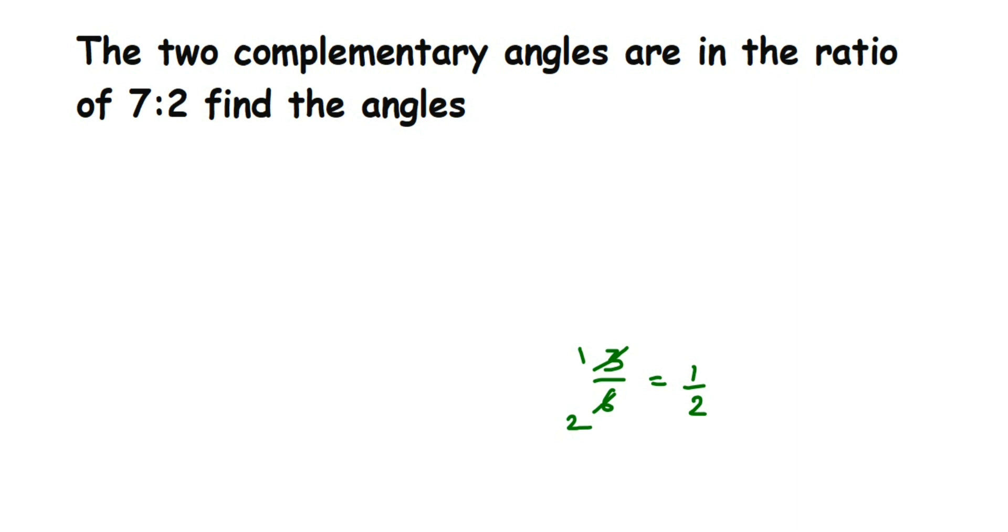So 1/2 is in reduced form, got it? If I write this as a ratio it will be 1:2. Like that, 7:2 is in reduced form. So 7/2 is not the actual number but it is in reduced form. That is why we're going to take a variable here.